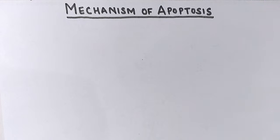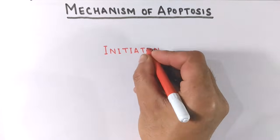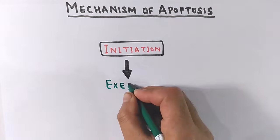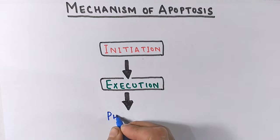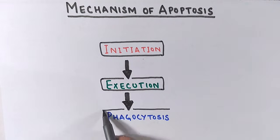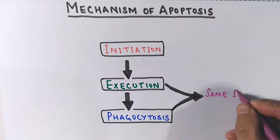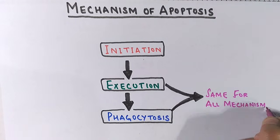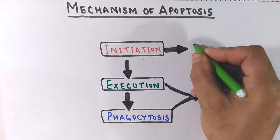In order to describe its mechanism, we see it has got three different stages: the first one is initiation, the second one is execution, and the third one is phagocytosis. The execution and phagocytosis are the same for all the mechanisms, but the initiation mechanism is different.